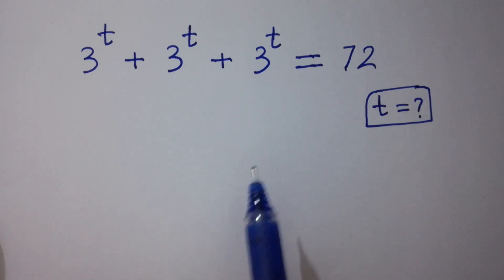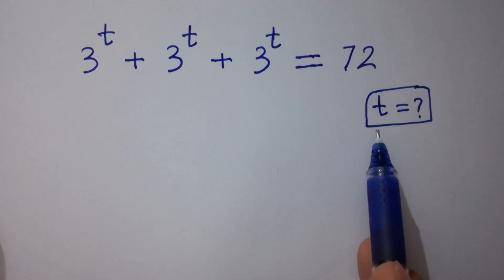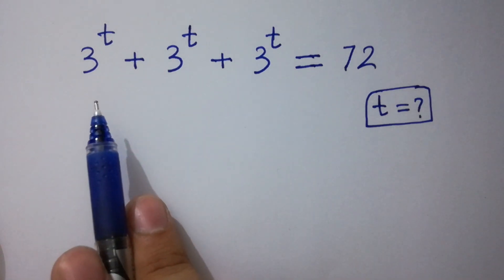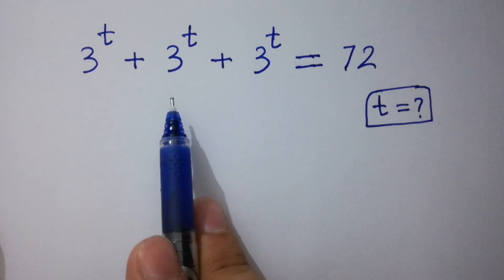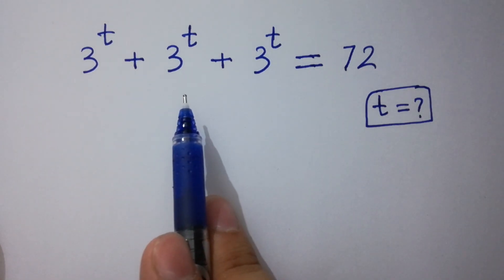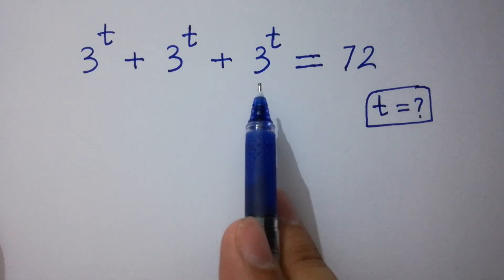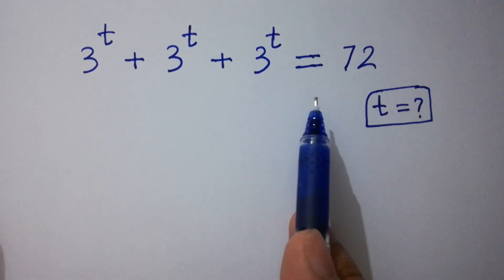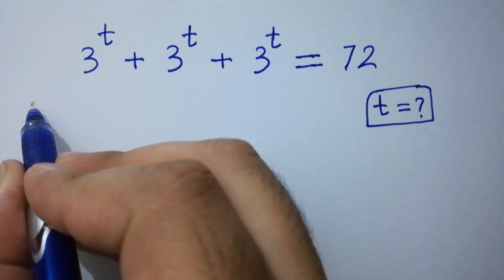Hello friends. Find the value of t if 3 to the power t plus 3 to the power t plus 3 to the power t equals 72. Let's have a solution.